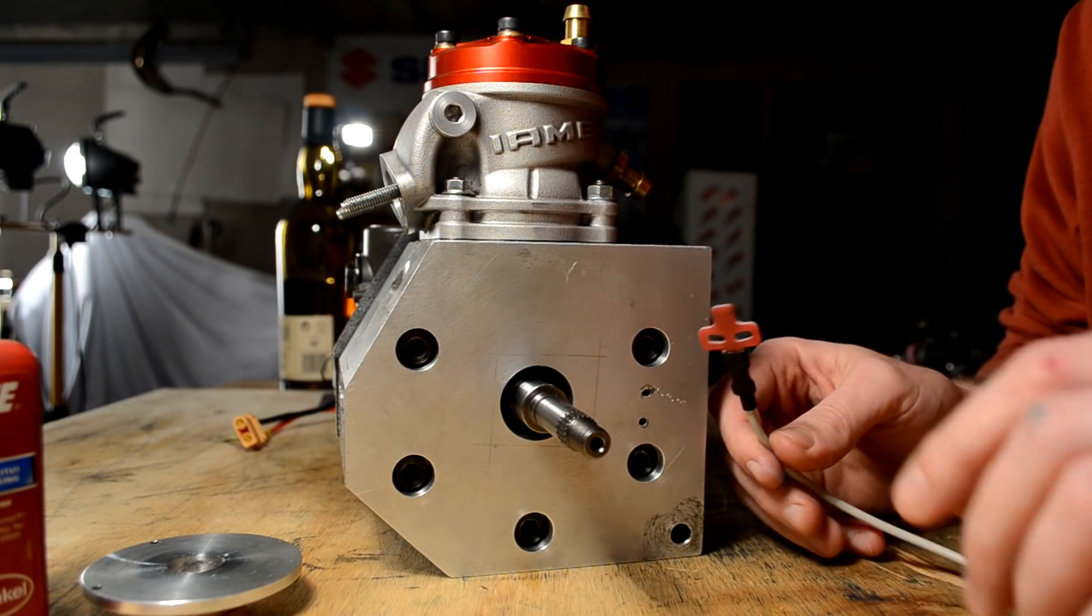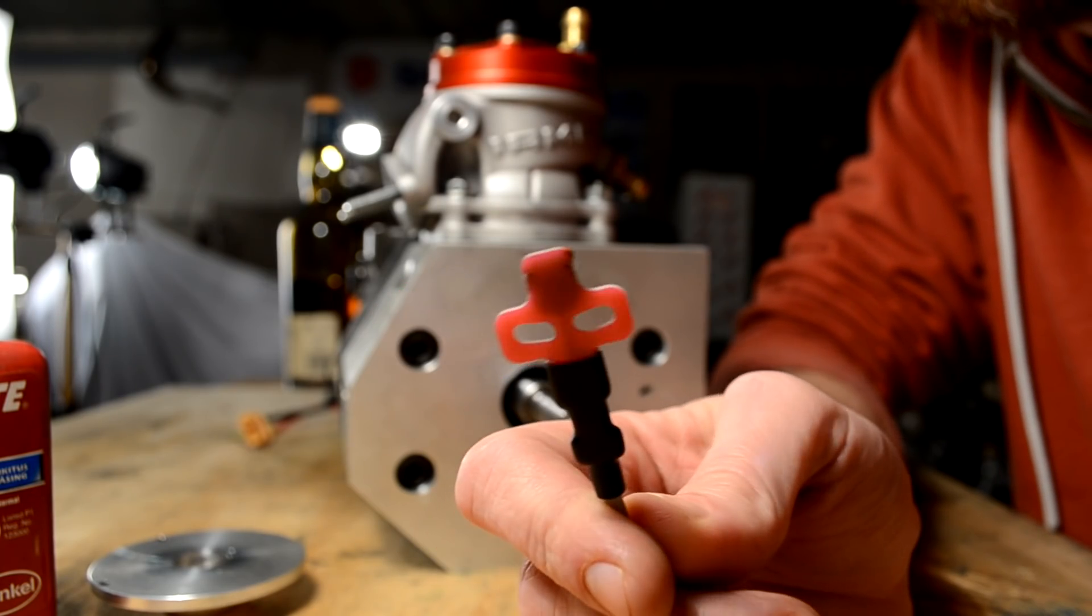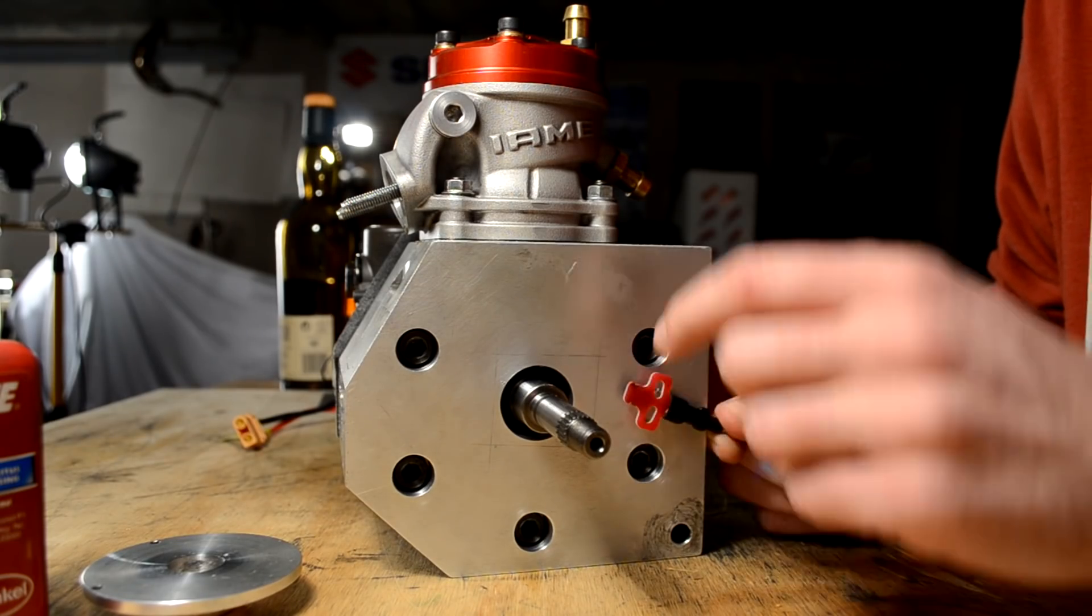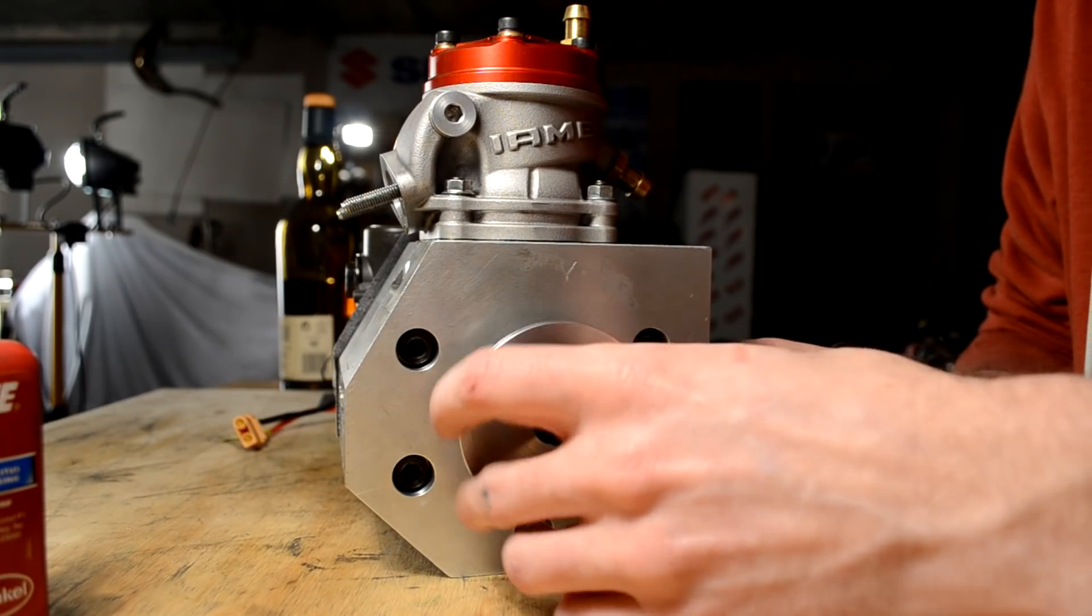First up is mounting the sensor. It sits like this sensing outwards and the flywheel is mounted like this.